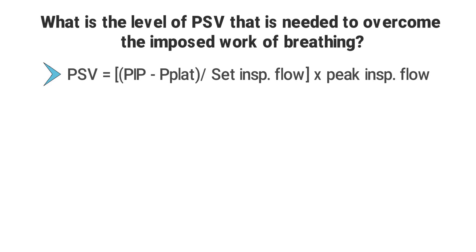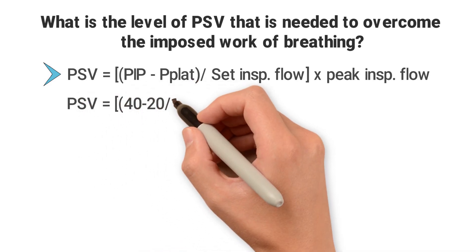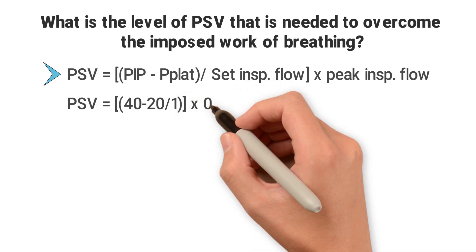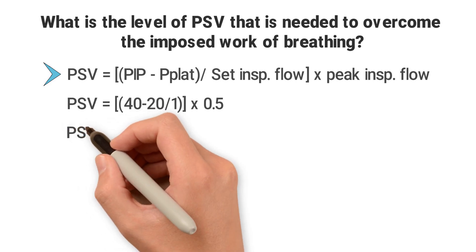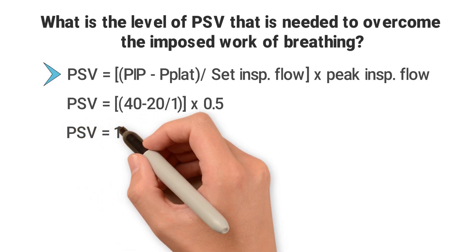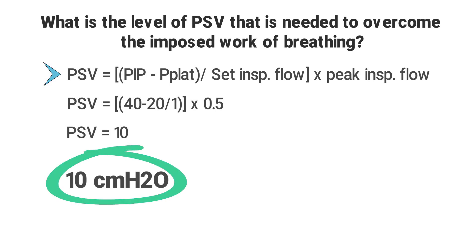So let's plug them in: 40 minus the plateau pressure of 20, divided by the set inspiratory flow of 1, then multiplied by the spontaneous peak inspiratory flow of 0.5. Basically you're just saying 20 times 0.5, which gives you 10. So after plugging all the numbers into the formula, the calculated pressure support level to overcome the imposed work of breathing for this patient is 10 centimeters of water pressure.